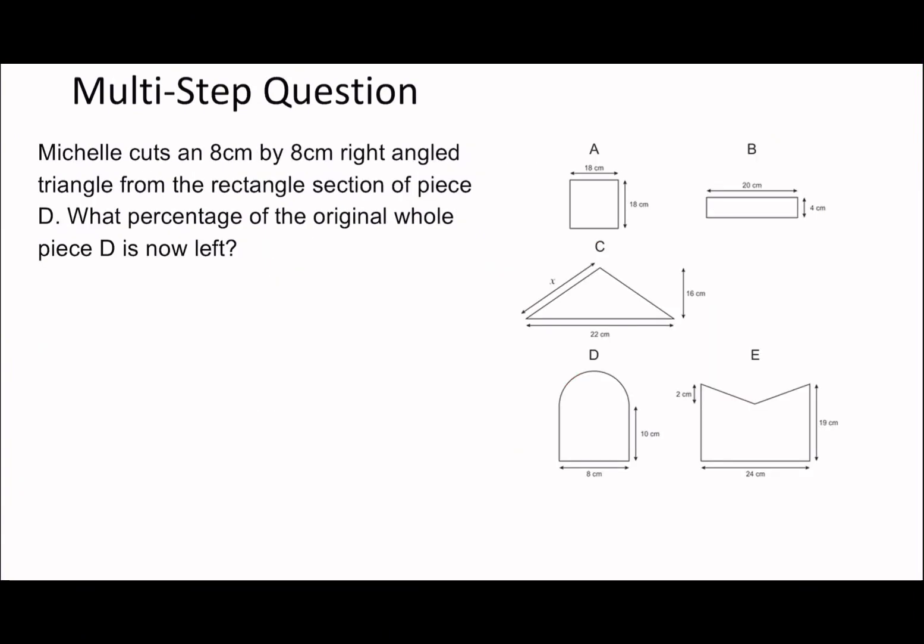Okay, so this is utilizing geometry, which I dropped a video on recently. So Michelle cuts an 8 by 8 centimeter right angle triangle from the rectangle section of piece D. What percentage of the original whole piece D is now left? So 8 by 8. So basically you have to work out this, and you can see that D is going to be essentially a semicircle stuck onto the end of some kind of square rectangle. So you can see here, therefore, this bit must be 4 centimeters.